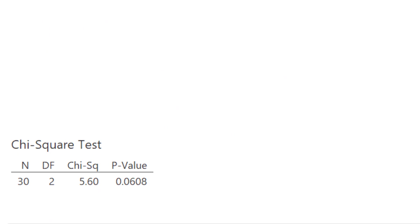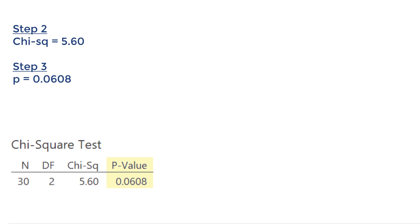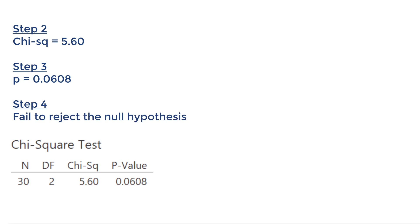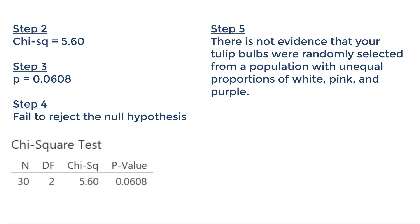The second table is what we need to complete the remainder of our five-step hypothesis testing procedure. Step 2 is to calculate the test statistic — our chi-square equals 5.60. Step 3 is to determine the p-value — our p-value is 0.0608. Step 4, make a decision: our p-value is greater than the standard 0.05 alpha level, so we fail to reject the null hypothesis. Step 5, state a real-world conclusion: there is not evidence that your tulip bulbs were randomly selected from a population with unequal proportions of white, pink, and purple.